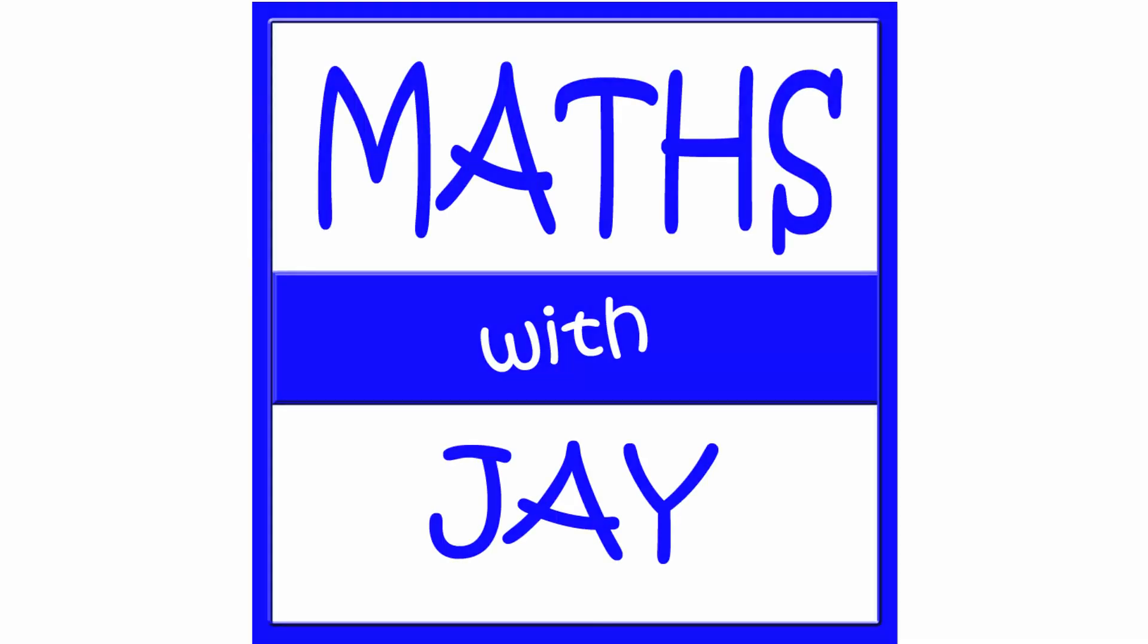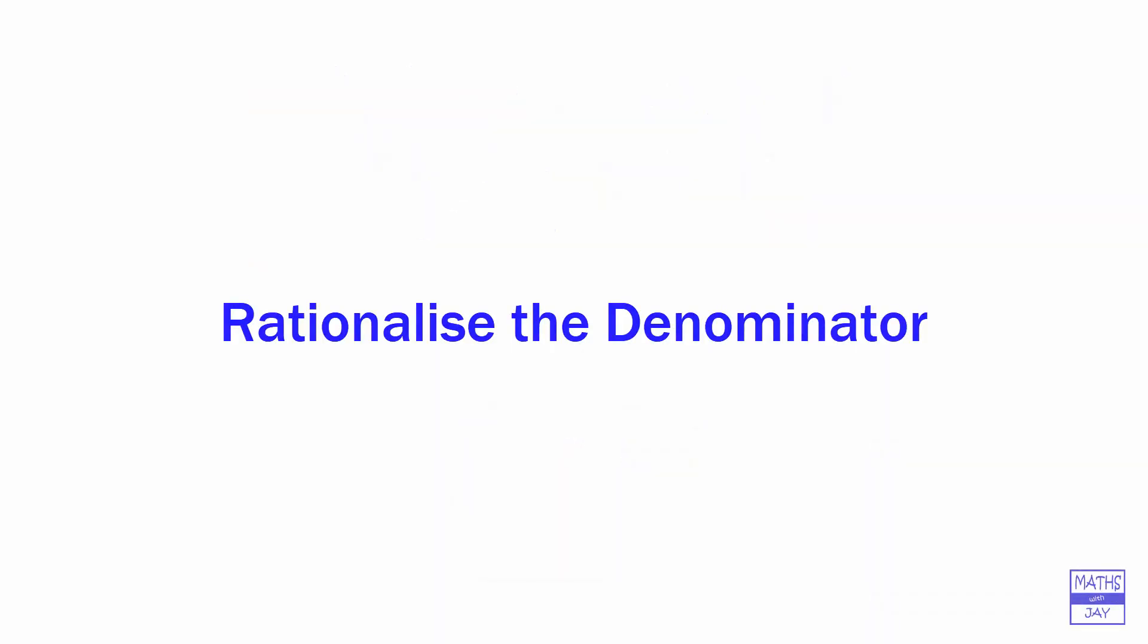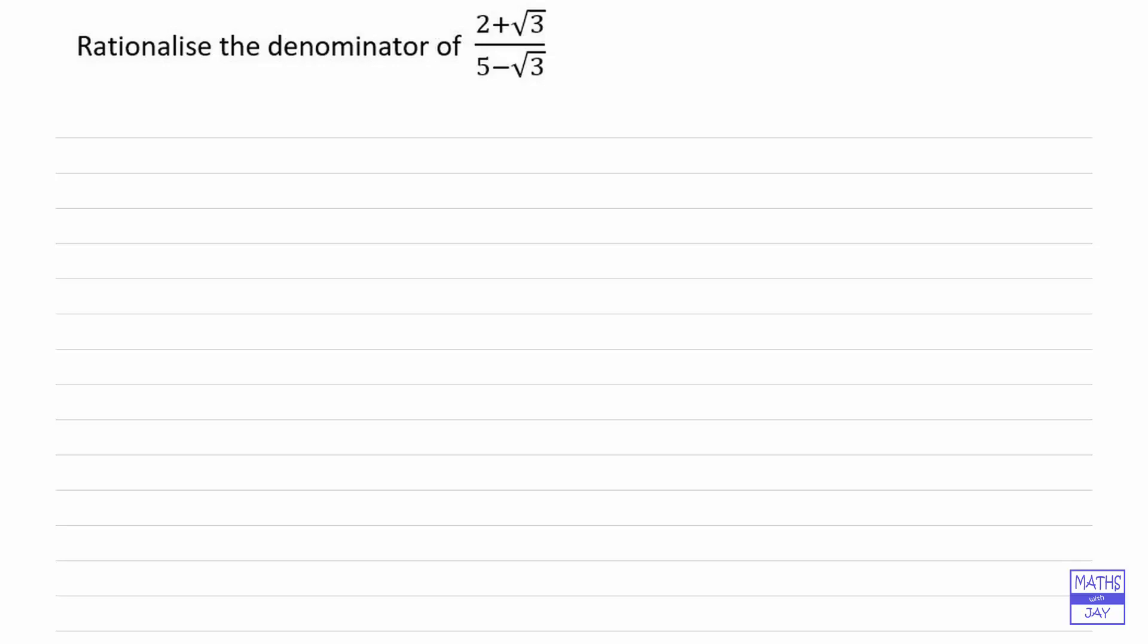Hello, welcome to Maths with Jay. We want to rationalize the denominator of this fraction, so that means we want an answer that doesn't have an irrational number in the denominator. Here there is a root 3 in 5 minus root 3, so there is an irrational number in the denominator as the fraction is currently written.